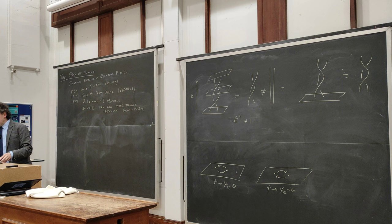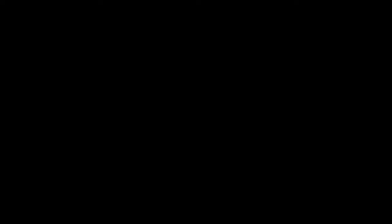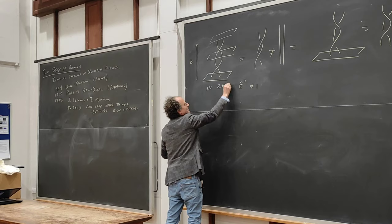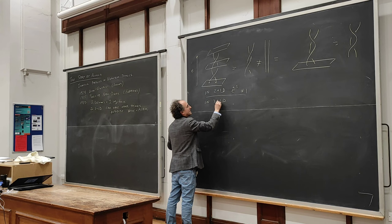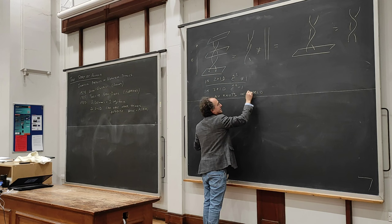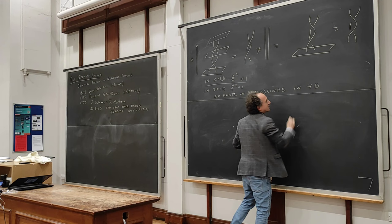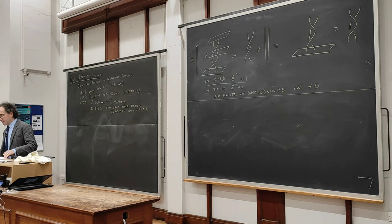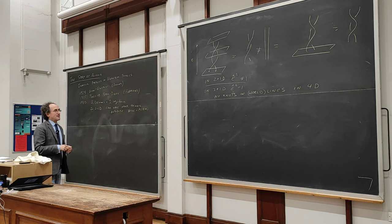You might say, couldn't you make the same argument in three plus one dimensions? It turns out that in 3+1 dimensions, exchange squared does equal one. This comes from a simple topological statement: there are no knots in world lines living in four dimensions total. This may seem completely obtuse if you've never thought about it before, but let me try to make it obvious. In 2+1 dimensions, exchange squared doesn't equal one because we can make knots in the world lines. But in 3+1 dimensions, you can't have knots in the world lines. I cannot draw things in four dimensions, so we'll have to argue by lower-dimensional analogy.